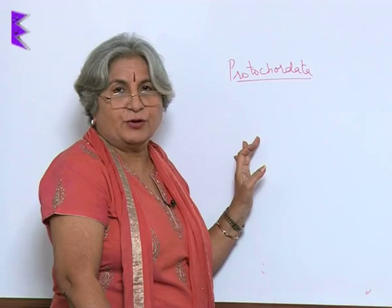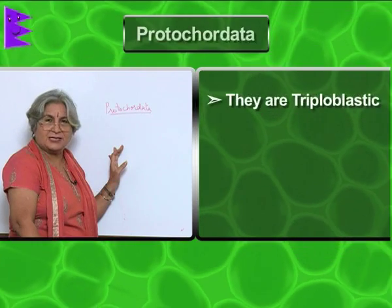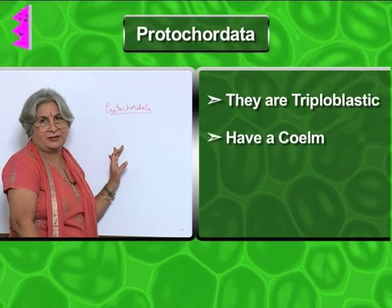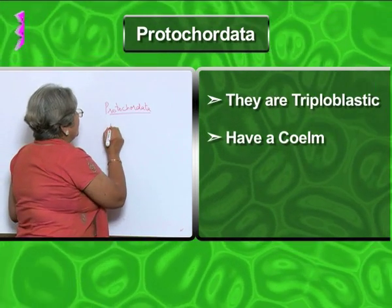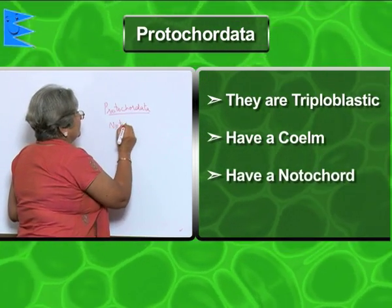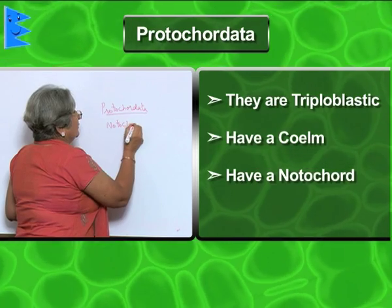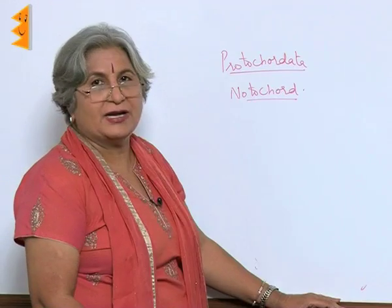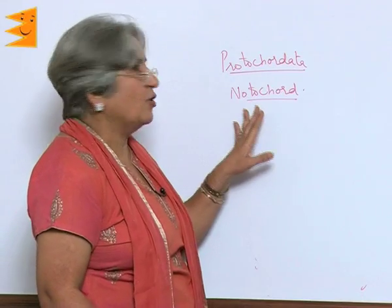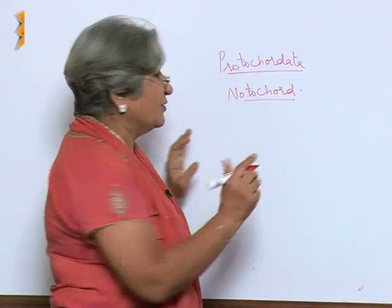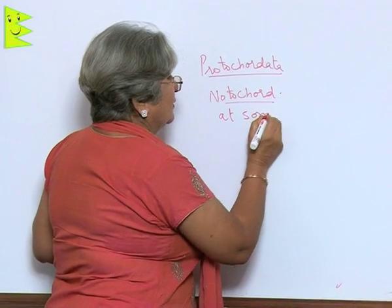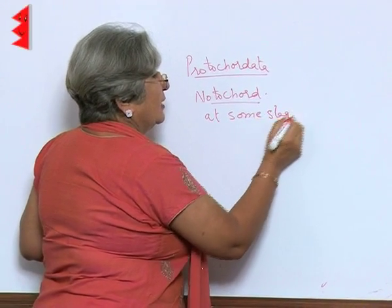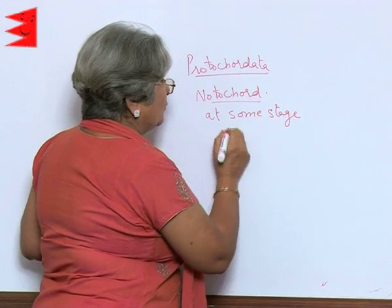But there is also a link. The proto-chordates are triploblastic and coelomate. In addition, they also have a notochord. The proto-chordates have a notochord at some stage of life — it may not be present throughout the life.